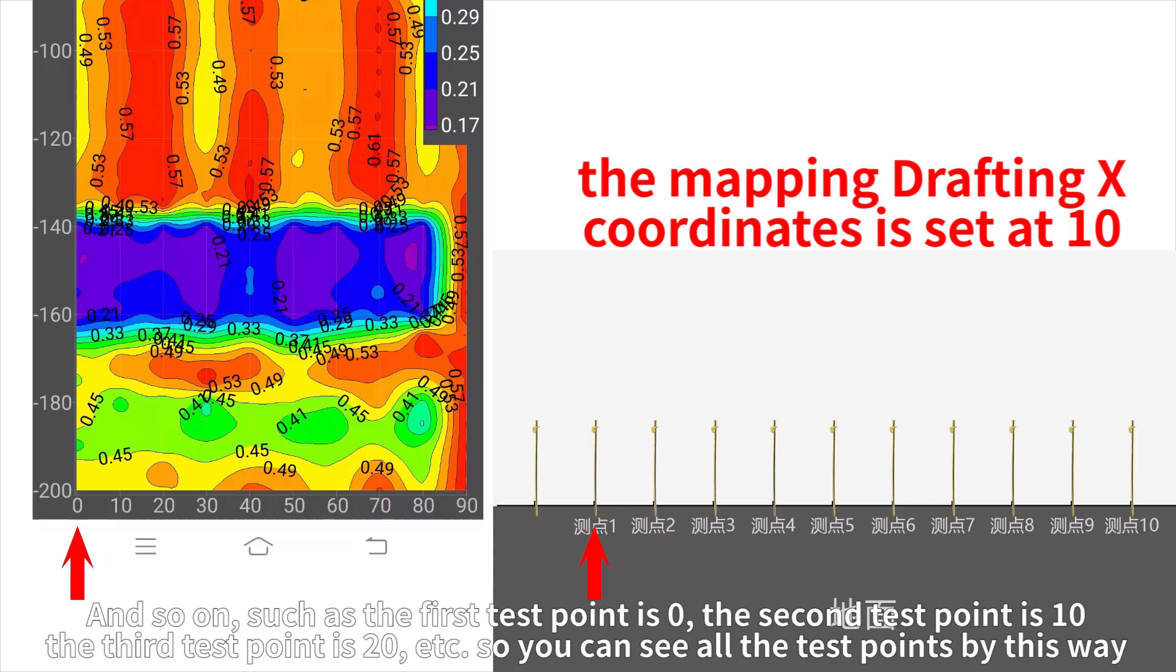And so on, such as the first test point is 0, the second test point is 10, the third test point is 20, etc. So you can see all the test points by this way.